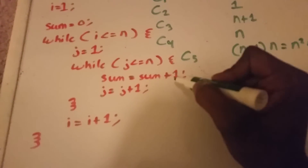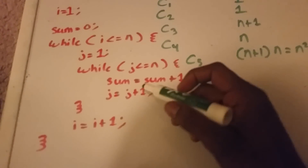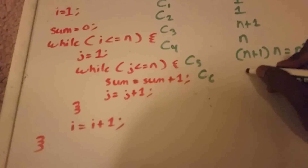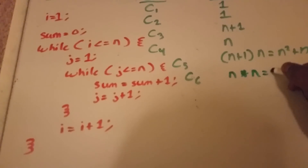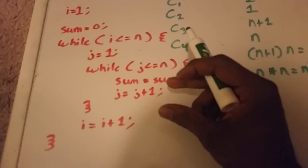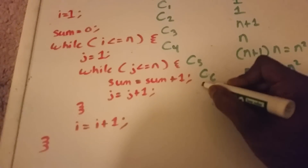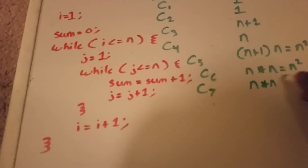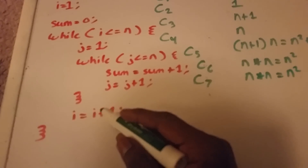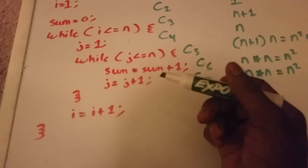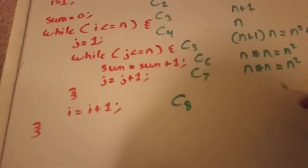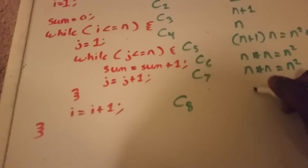Next we have sum equals sum plus one: it takes some constant unit of time C6, and it's run n times from the inner loop and n times from the outer loop, so the running time is n times n which equals n squared. Same for the j increment statement — it's run n times within the inner loop and n times within the outer loop, with constant cost C7, so it also runs n squared times. Last is i equals i plus one, which costs C8 and is only run in the outer while loop, so it runs n times.